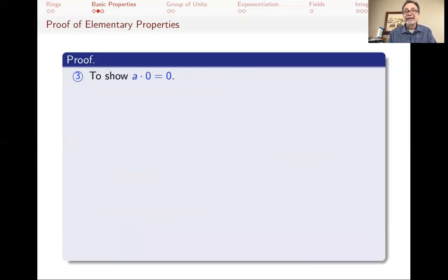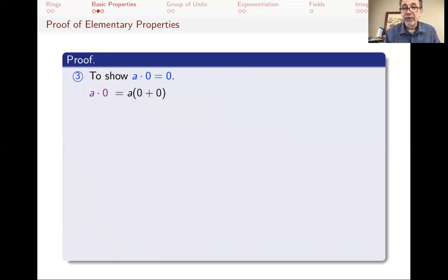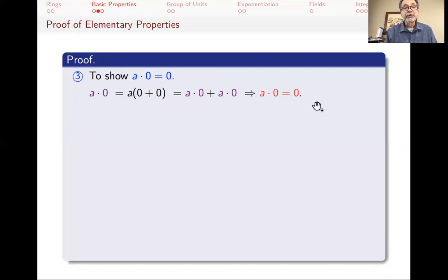To prove a times zero equals zero: we write a times zero equals a times (zero plus zero) since zero plus zero equals zero. By the distributive law, this equals a times zero plus a times zero. Since we have the additive inverse of (a times zero), we can add minus(a times zero) to both sides, giving a times zero equals zero.